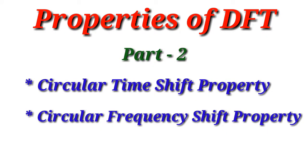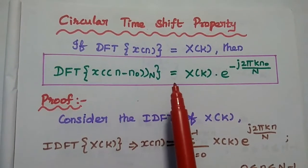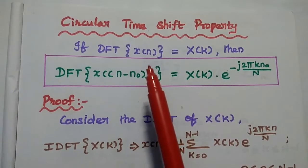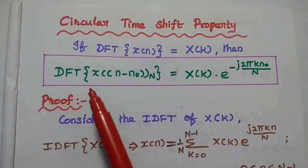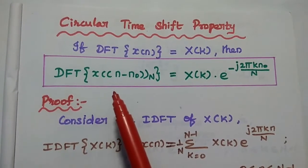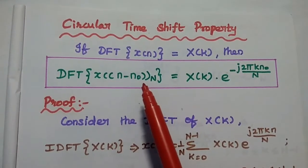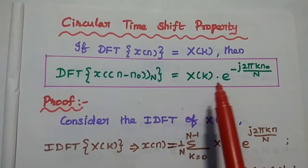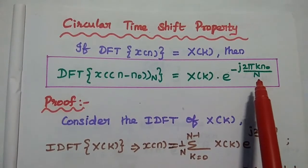Now we are going to prove the circular time shift property and circular frequency shift property of DFT. Starting with the circular time shift property: if the discrete Fourier transform of a sequence x(n) is equal to X(k), then the DFT of the circularly time shifted signal x((n minus n₀)) mod N is equal to X(k) multiplied with e^(−j2πkn₀/N).